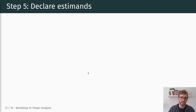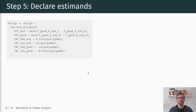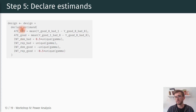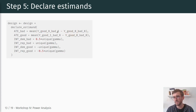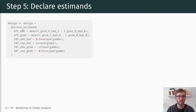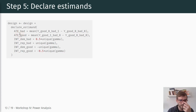These are the simulated outcome variables based on the data generating process and covariates we specified, accounting for our epsilon error term. These are the potential outcomes — given the fundamental problem of causal inference we don't observe all of them, but in this hypothetical scenario we can use them to specify our treatment effects of interest. That's what we do in the next step: declaring the estimands, which are the quantities about the population we're trying to make inferences about. We're going to focus on six different estimates to examine power for.